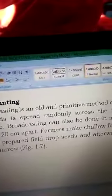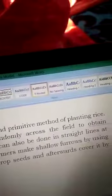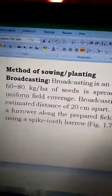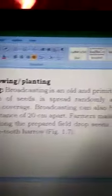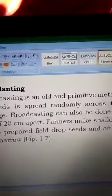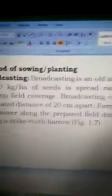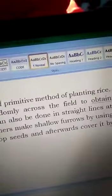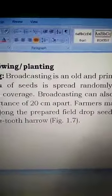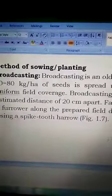Broadcasting is a primitive method of rice planting. We generally use the seed rate of 60 to 80 kgs per hectare and seeds are randomly spread across the field to obtain uniform field coverage. We can also use straight lines at a distance of 20 cm.